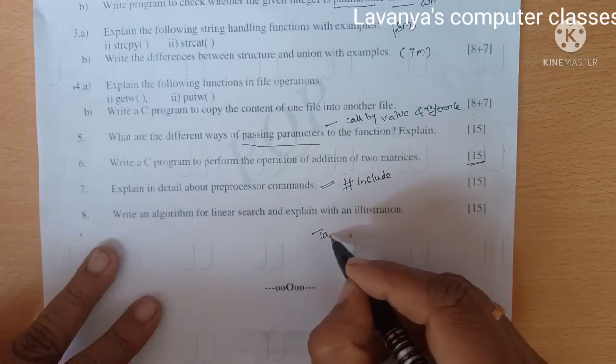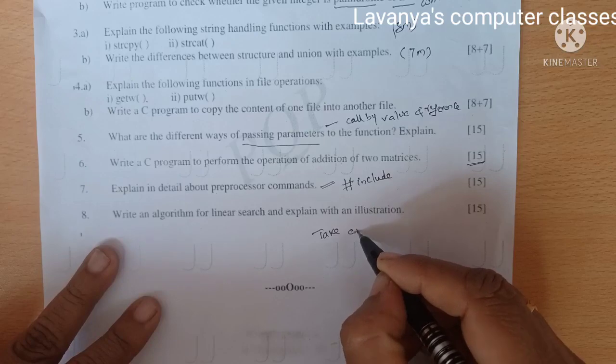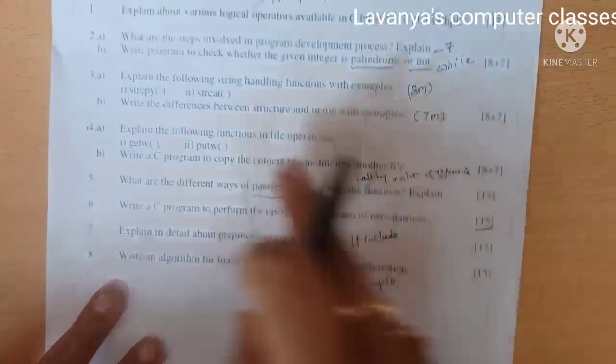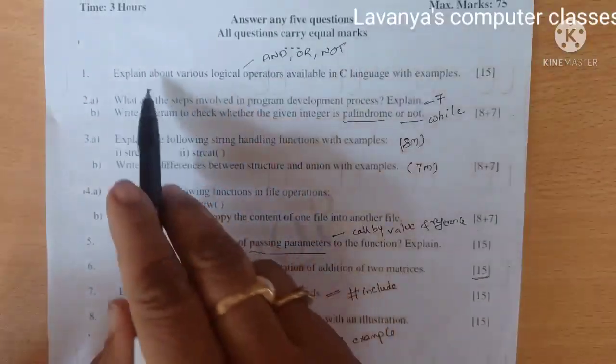Seventh question is explain in detail about preprocessor commands. The preprocessor commands are starting with hash symbol, hash include, stdio.h, everything.